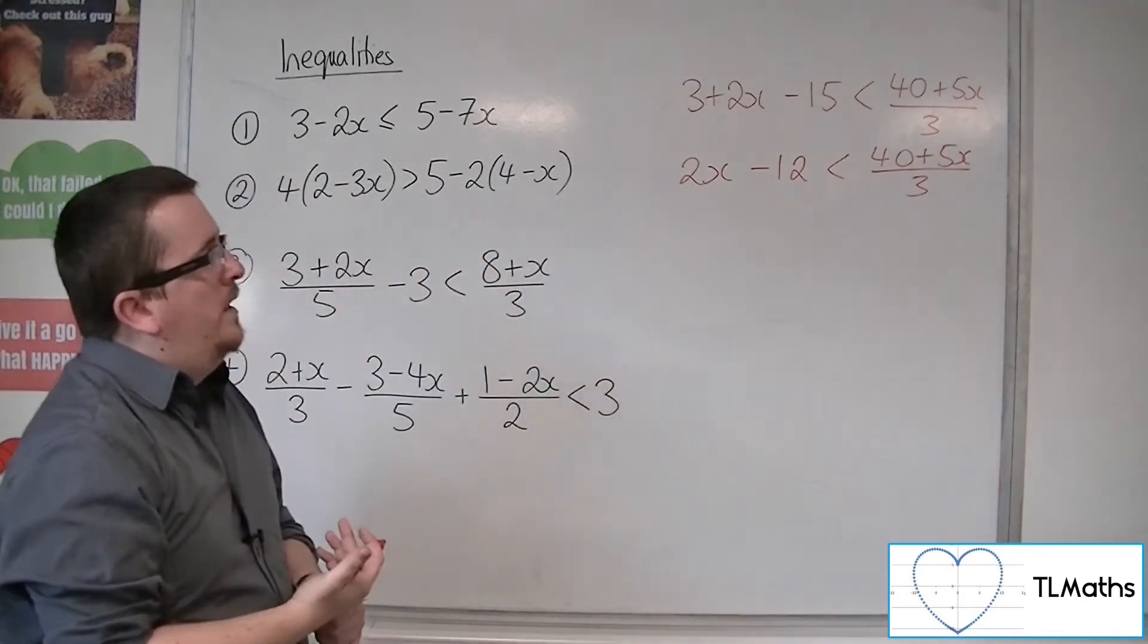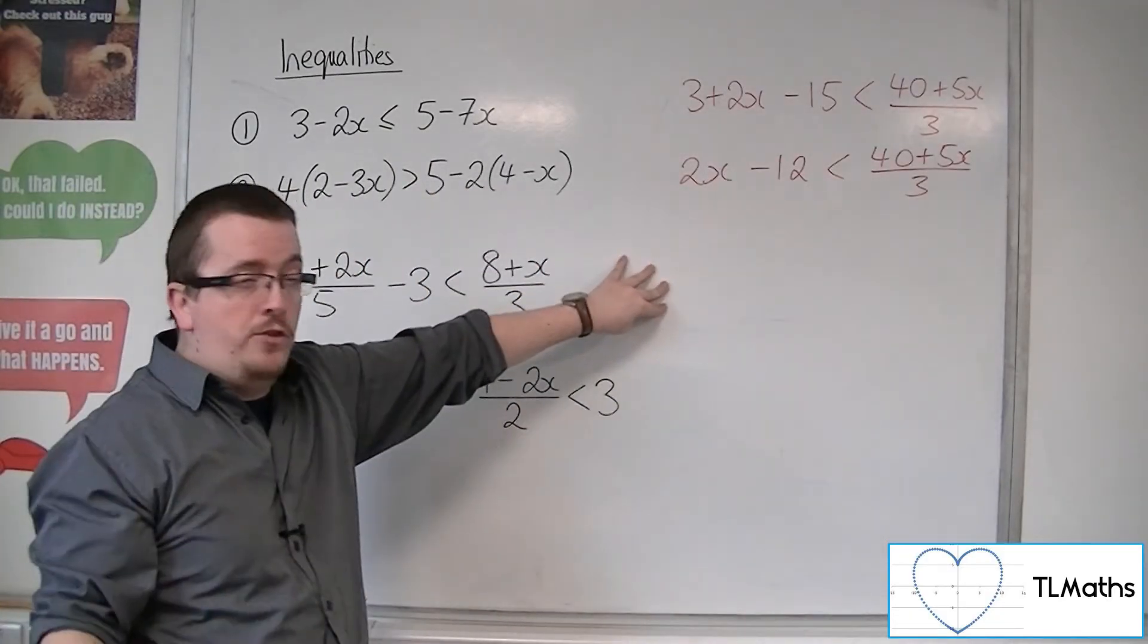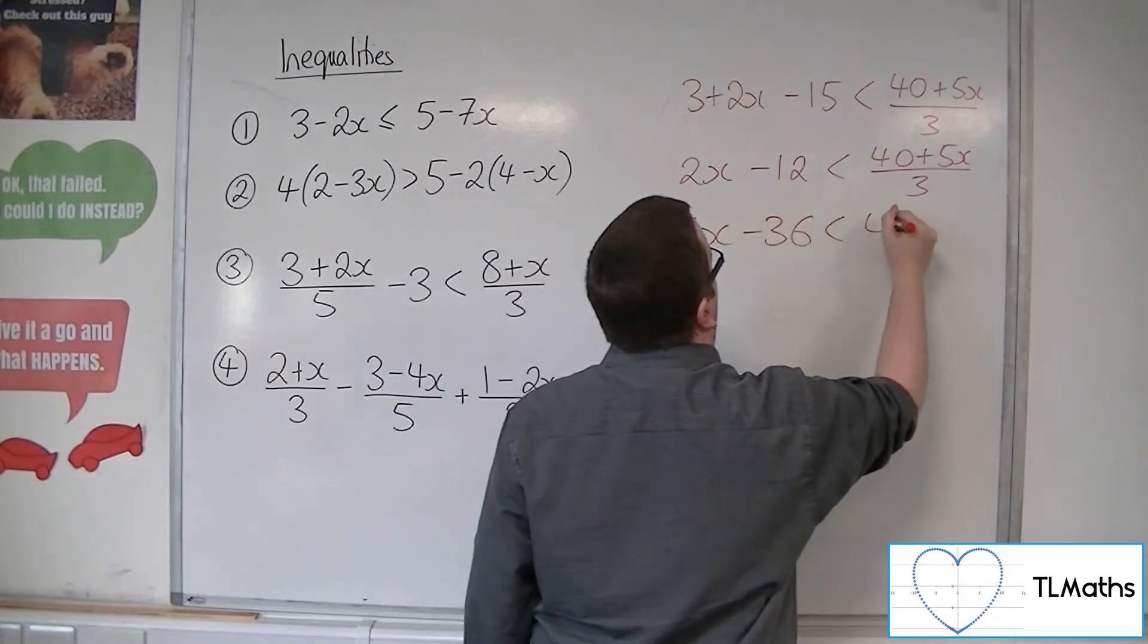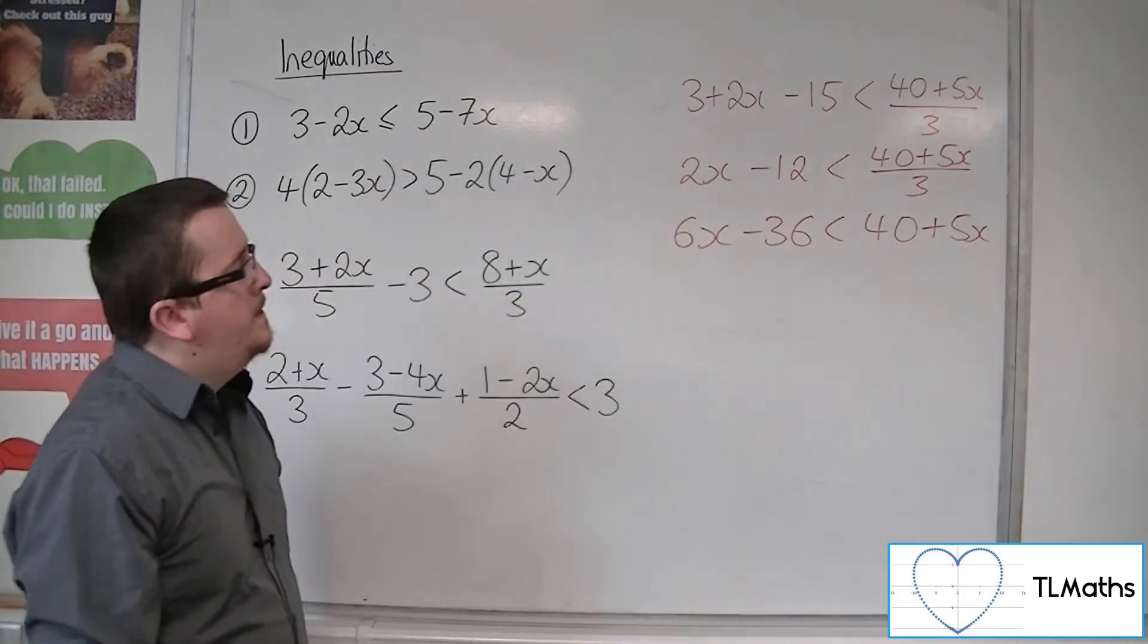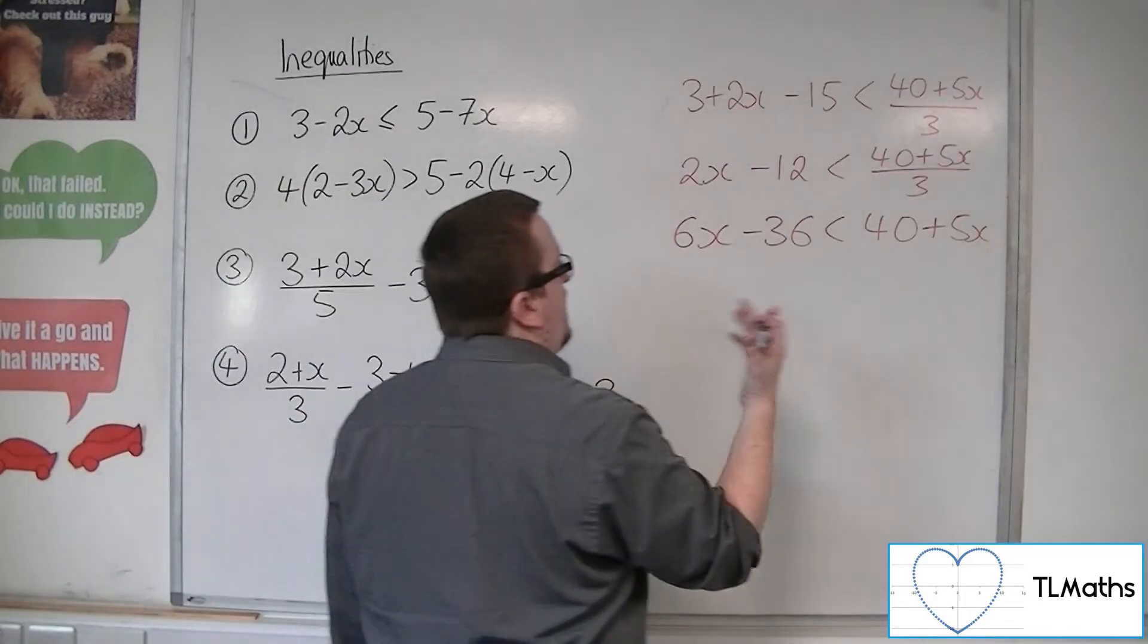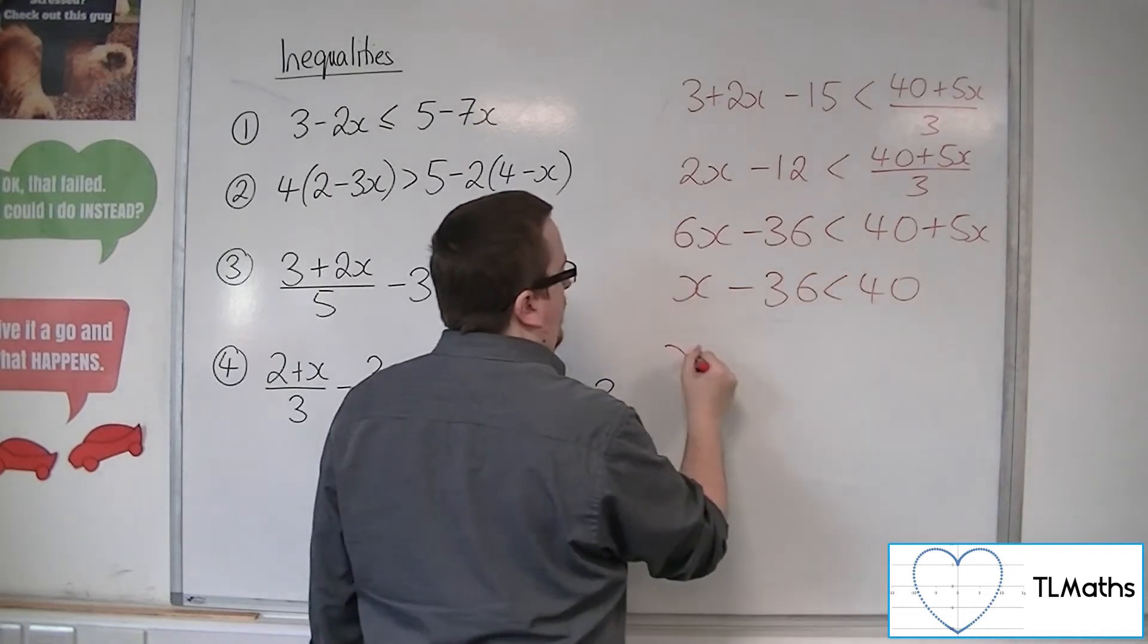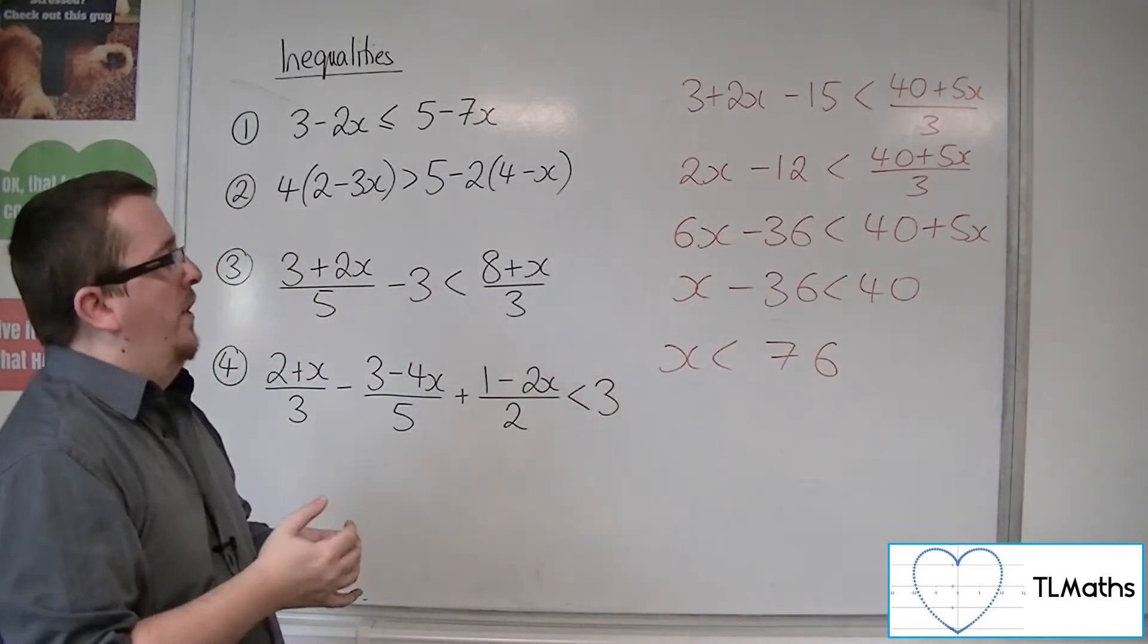So now I want to get rid of this fraction over here. So I'm going to multiply everything through by 3. So I'm going to have 6x minus 36 is less than 40 plus 5x. So now I'm going to move all the x's onto the left-hand side. If I take 5x from both sides, I've got x minus 36 is less than 40. So x is less than 76. And that solves the inequality.